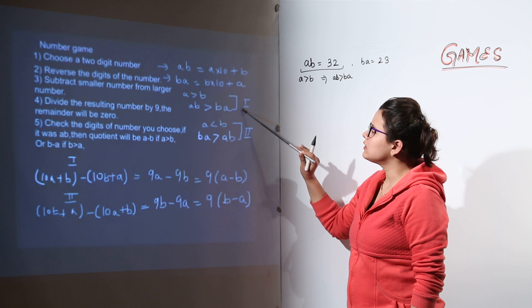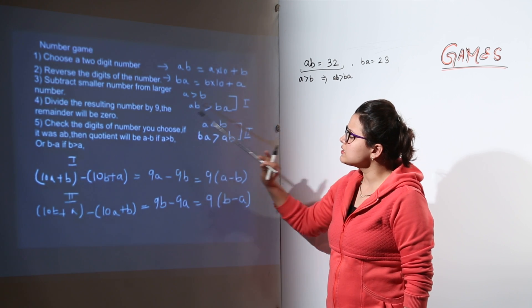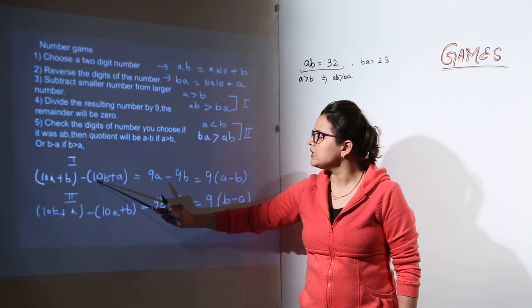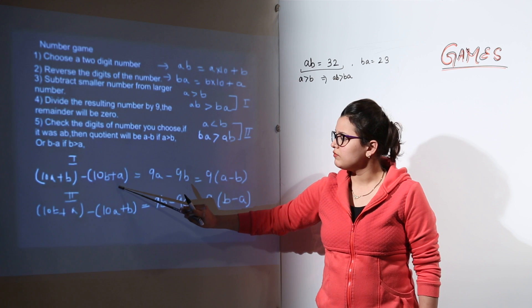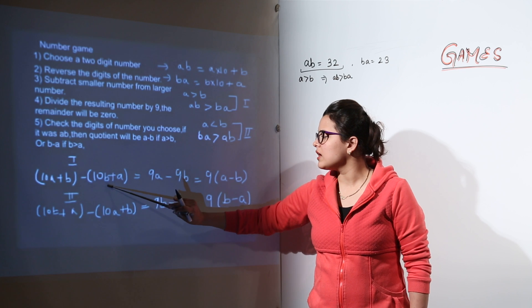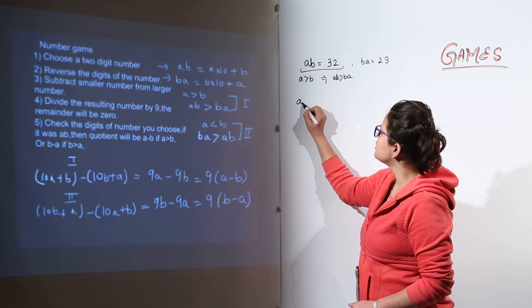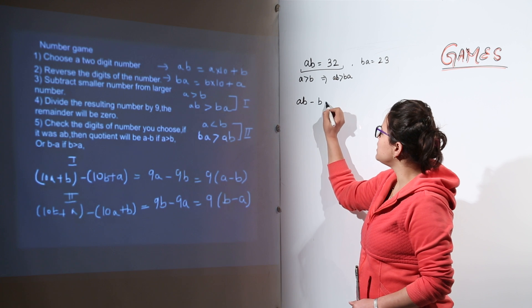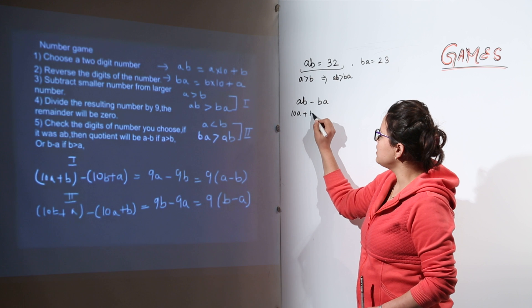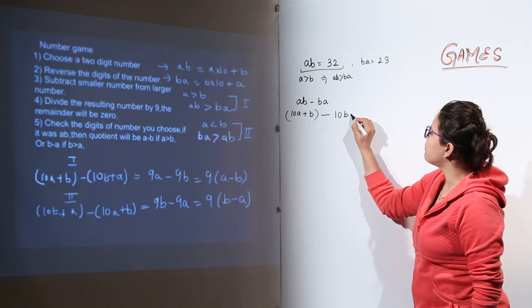So that is what I have shown in this case. If this is the case what will happen? If AB is greater than 10A plus B minus 10B plus A. We are subtracting BA from AB. So AB minus BA will give us 10A plus B. I am going to show it over here. So AB minus BA. Now this was written as 10A plus B whole minus 10B plus A.